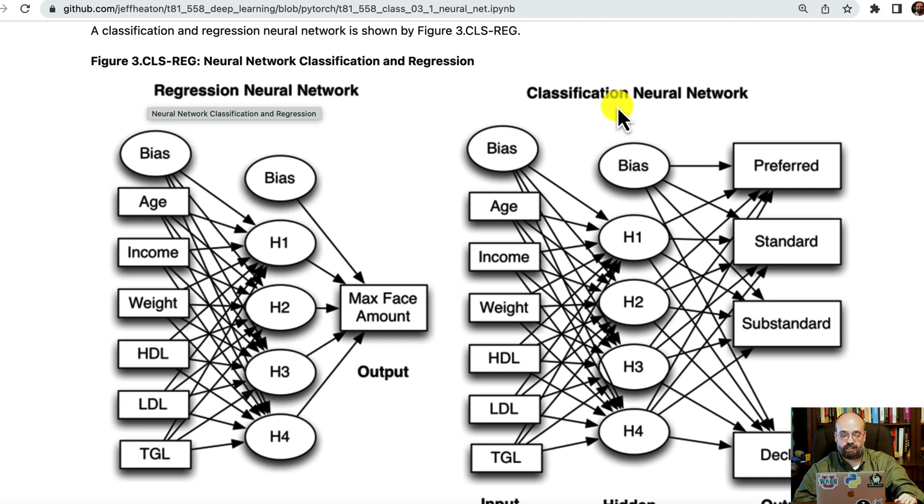Classification neural network is similar, but you're going to sometimes have multiple outputs. If you're just doing binary classification, classifying between two things, it looks really relatively similar to a regression neural network. You're just going to have a single output neuron and that output neuron you're probably going to use a logit or something to bound it into zero to one for that prediction, but the rest of the neural network is really pretty similarly structured.